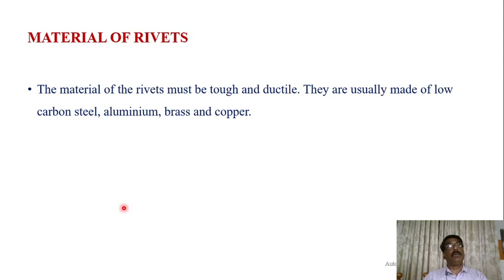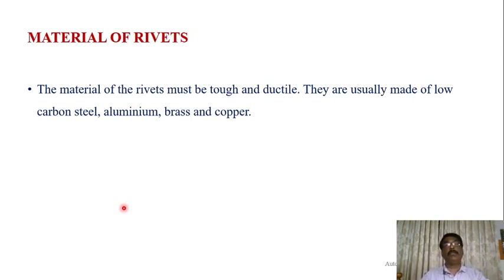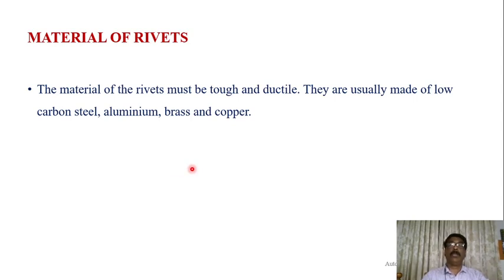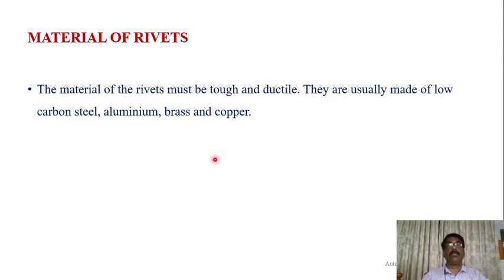The material of the rivets must be tough and ductile. Toughness is needed to withstand load and stresses, and ductility is needed because the tail must deform and take the shape of a head during riveting. Suitable materials include low carbon steel and nickel steels. Aluminum, copper, and brass are also used. When strength and leak-proofness are the major criteria, steel rivets are extensively used.